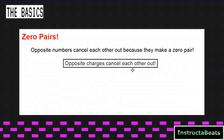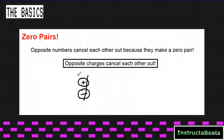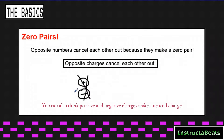Today we're not using a number line, we're going to be using charges to represent this. Now, some people use counters — I call them charges — really it's the same thing when you draw it out. What we need to know is that opposite charges cancel each other out. So if I have a positive charge and a negative charge, these are going to cancel each other out and we would call that a zero pair, because positive and negative cancel each other out.